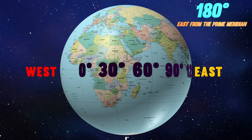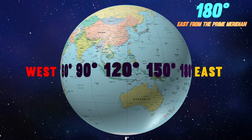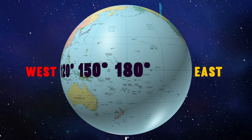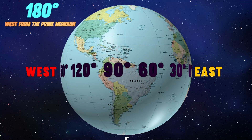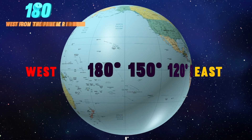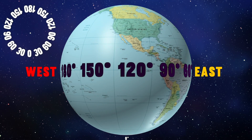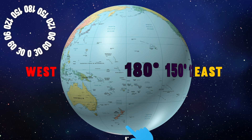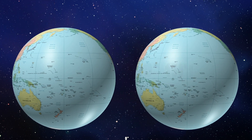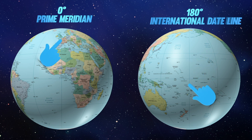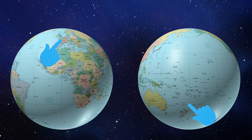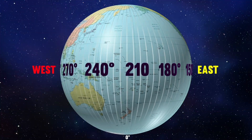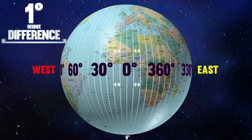Longitude can be defined maximum as 180 degrees east from the prime meridian and 180 degrees west from the prime meridian. East and west together contain only one single 180-degree line, called the International Date Line, which passes through the middle of the Pacific Ocean. Halfway around the world from the Greenwich Meridian, the International Date Line lies on the opposite side of the world to the prime meridian. There are 360 longitudes on the earth with a one-degree difference.